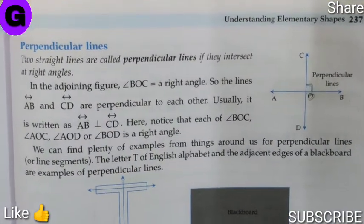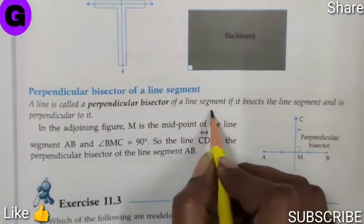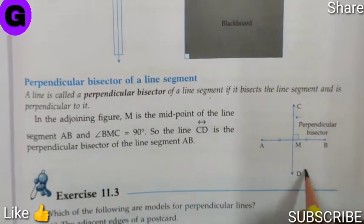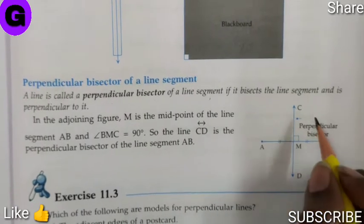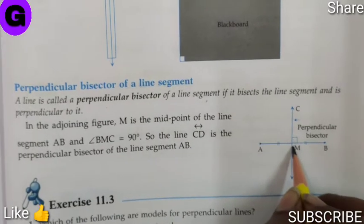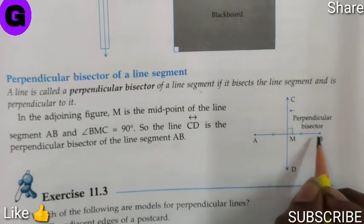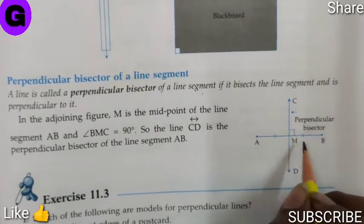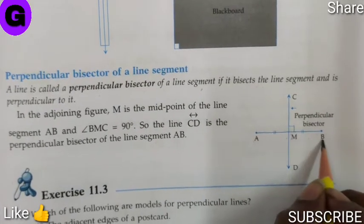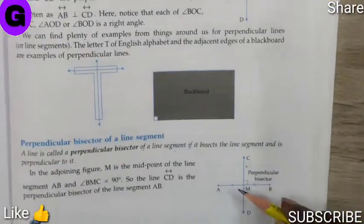And what is a perpendicular bisector of a line segment? A line is called the perpendicular bisector of a line segment if it bisects the line segment and is perpendicular to it. As you can see the figure here, AB and CD is bisecting at M. So no doubt it is perpendicular. But the word bisector means that it is dividing the line AB into two equal halves. That means AM is equal to MB. So this is the difference between perpendicular line and perpendicular bisector.